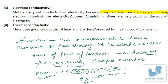Non-metals are not good conductors of electricity, except for graphite. Graphite is a form of carbon and is a very good conductor of electricity — do remember this exception.